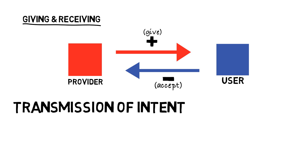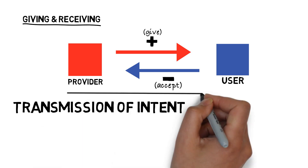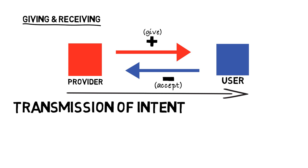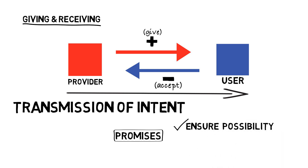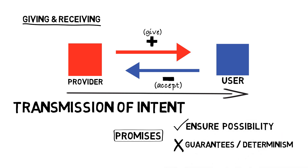The two-way binding enables what was intended to propagate from one agent to another, but it still doesn't guarantee that either will be able to keep its promises. Promises only ensure the possibility of intended outcomes — they don't bring about guarantees or determinism.